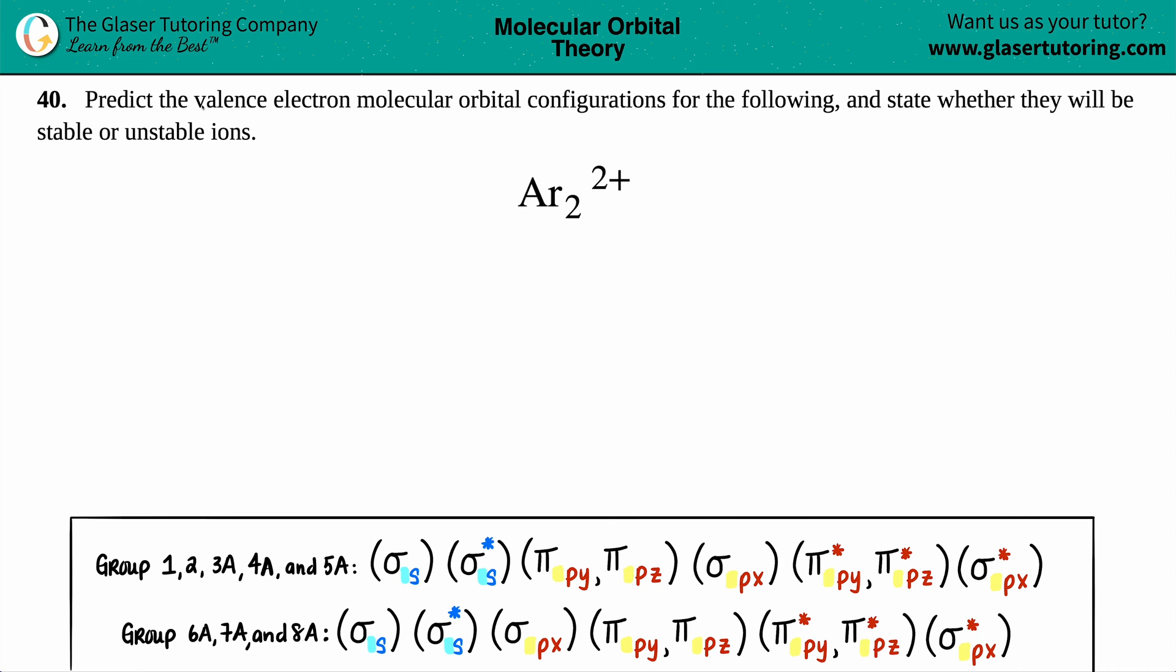Number 40: Predict the valence electron molecular orbital configurations for the following and state whether they will be stable or unstable ions. We have Ar2 with a 2+ charge. Before we address the molecular orbital diagram, we first have to figure out how many valence electrons we're working with.